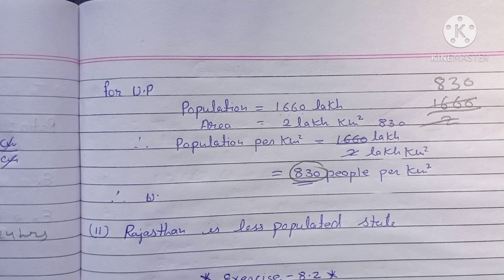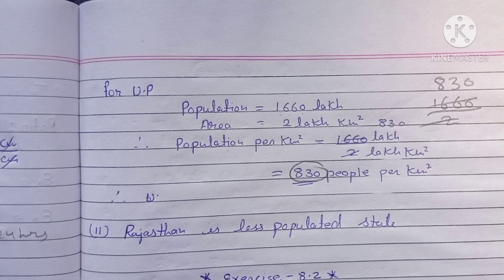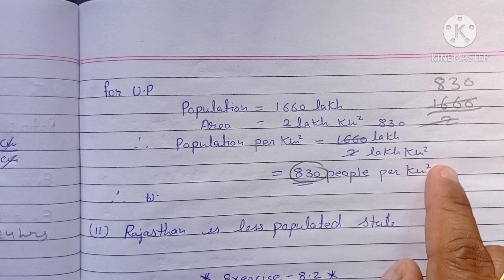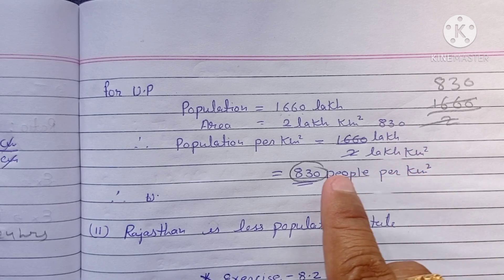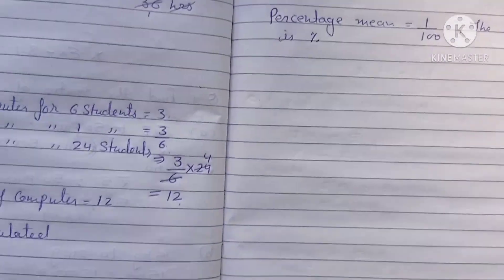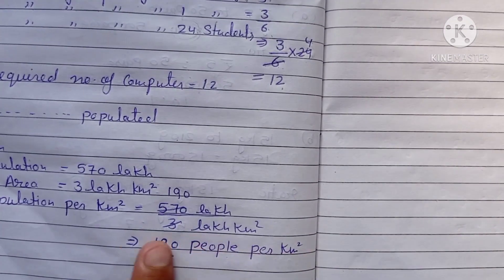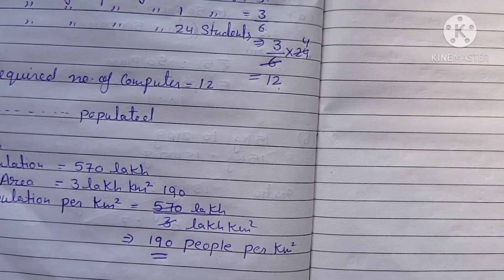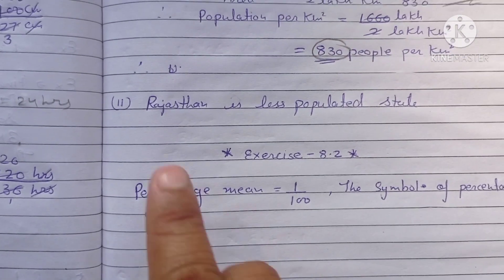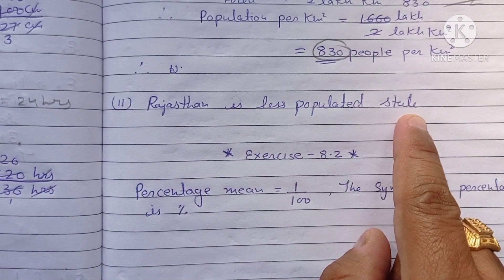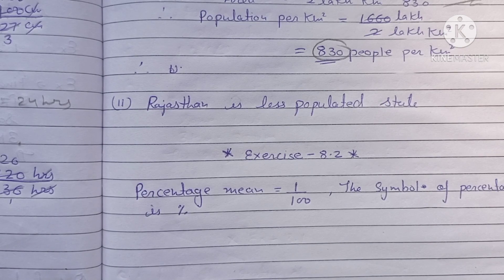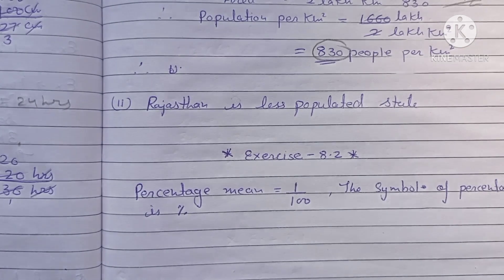Rajasthan has 190 people per km². The second question is: which state is less populated? In Rajasthan there are 190 people per km² and in UP there are 830 people per km². So Rajasthan is less populated. This completes Exercise 8.1. Thank you.